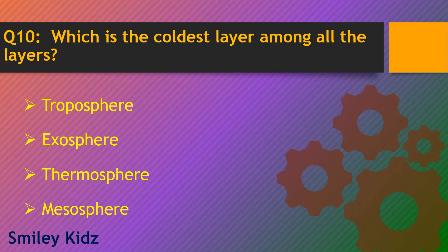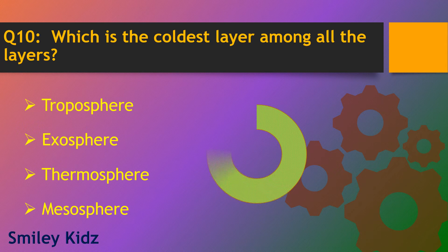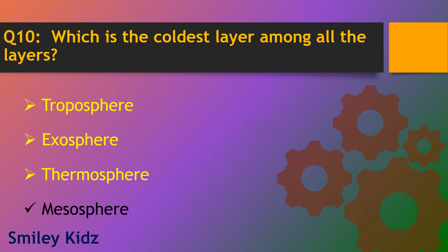Question number 10. Which is the coldest layer among the layers? Options are troposphere, exosphere, thermosphere and mesosphere. The right answer is mesosphere. Mesosphere is the coldest layer among all the layers.